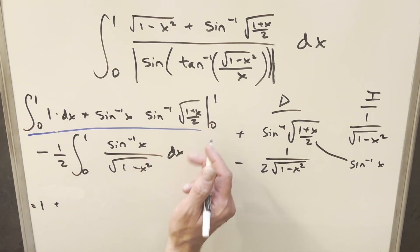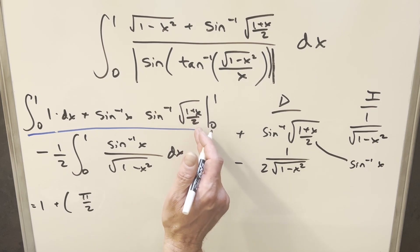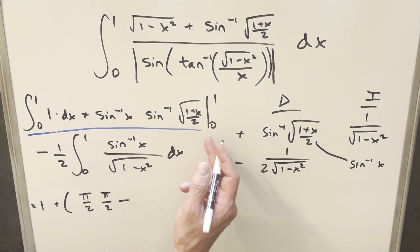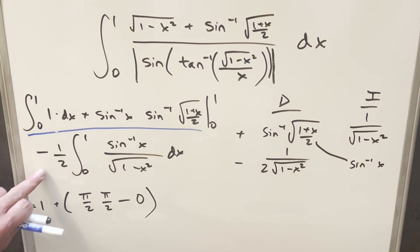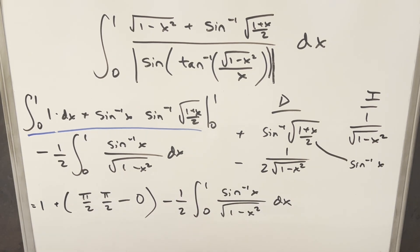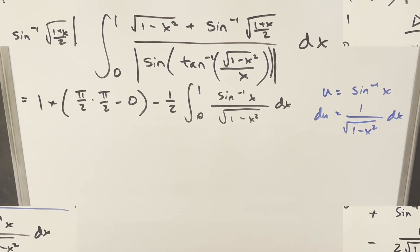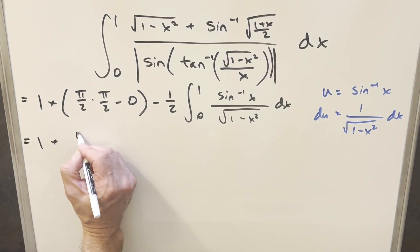Now evaluating the boundary term at 1: arcsin(1) = π/2, and plugging 1 into √((1 + x)/2) gives √(2/2) = 1, so arcsin(1) = π/2 again. That product is π²/4. At 0: arcsin(0) = 0, which zeros out the whole term. So the boundary evaluation gives π²/4. Since the derivative of arcsin(x) is 1/√(1 - x²), we can set u = arcsin(x), du = dx/√(1 - x²).